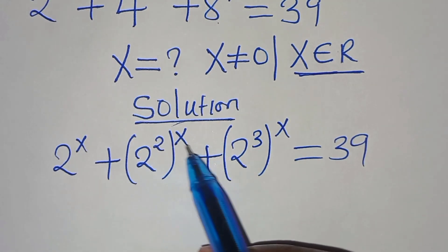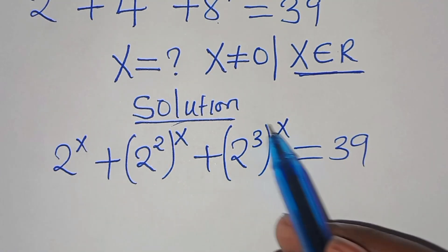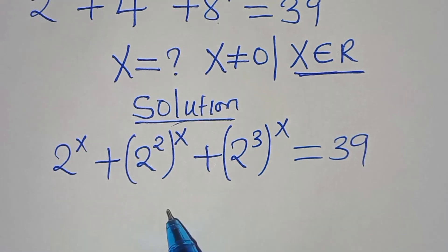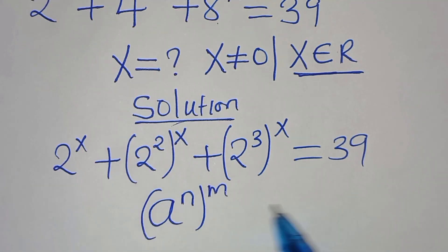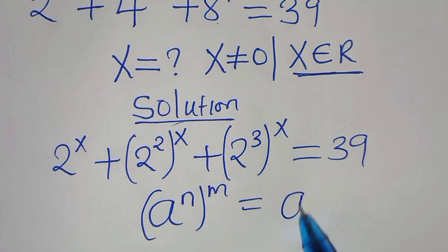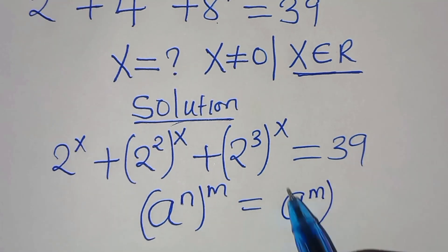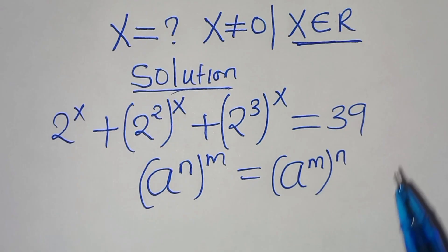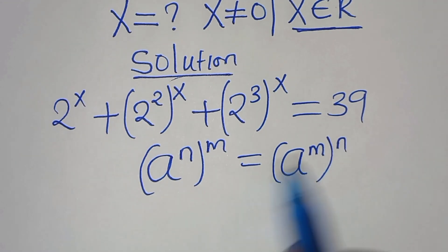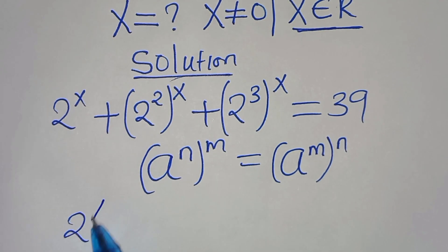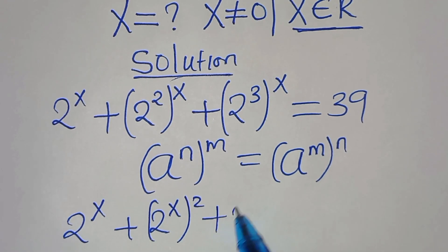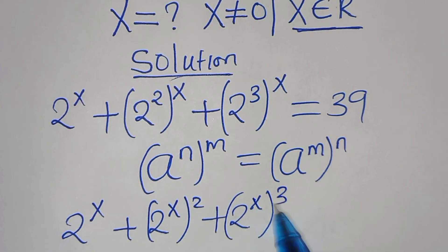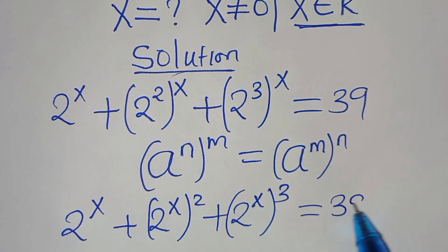Now, 2 to the power of 2 raised to power x, and 2 to the power of 3 raised to power x, are in the form of a to the power of n raised to power m, which we can express as a raised to the power of mn. Applying this exponent property, we have 2 to the power of x, plus 2 to the power of x raised to the power of 2, then plus 2 to the power of x raised to the power of 3, this is equal to 39.